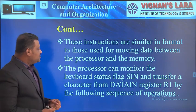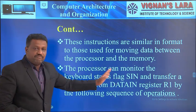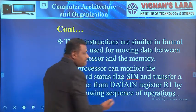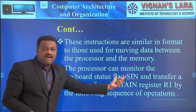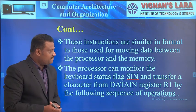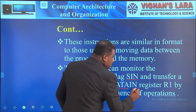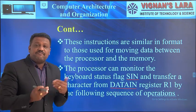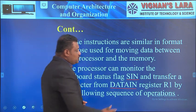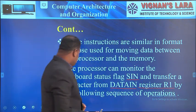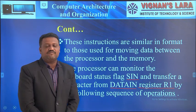These instructions are similar in format to those used for moving data between a processor and memory. The processor can monitor the keyboard status flag S-in, and transfer a character from the data-in register — the input buffer register present in the input device — to the CPU register R1 using the following sequence of instructions.